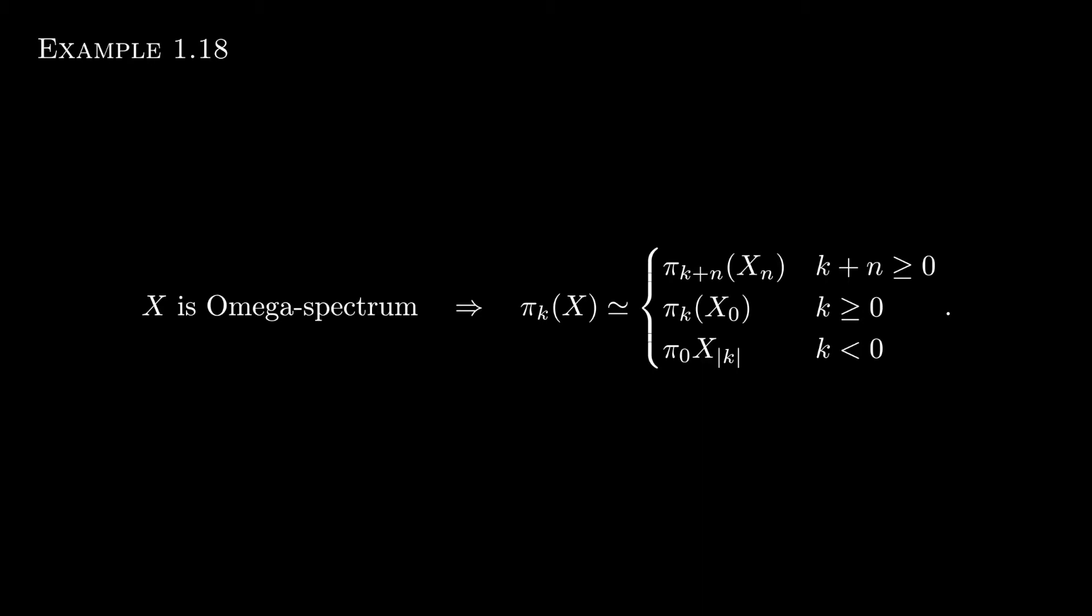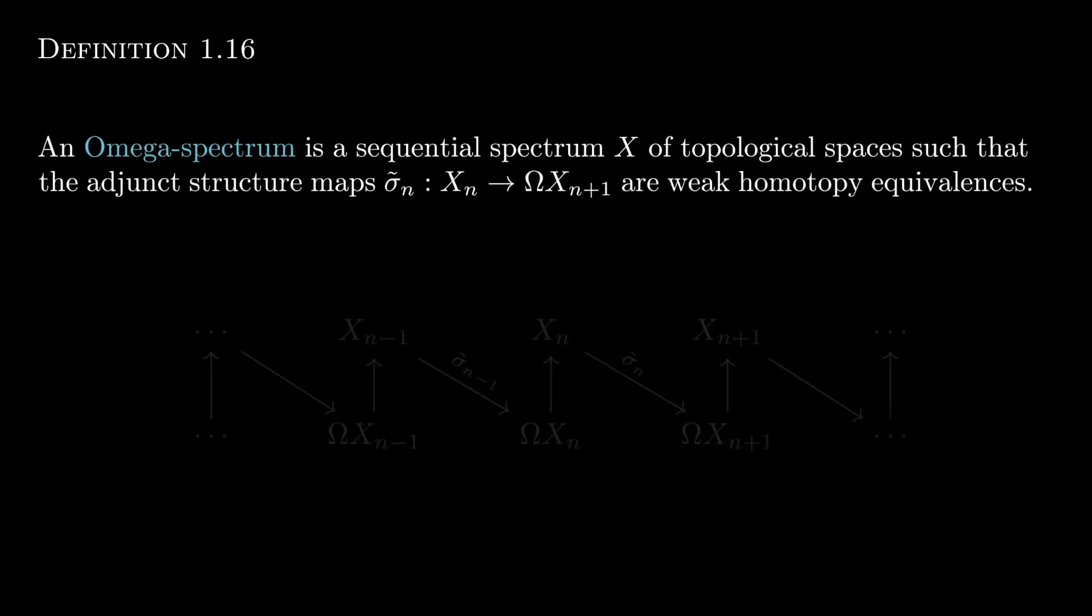Now recall that the structure maps in the level of homotopy groups are defined in this way, and we see that the added requirement we'd like to impose is to make adjunct structure maps weak homotopy equivalences. So just to make this explicit, here's the definition for omega spectra. Again, we require that the adjunct structure maps are weak homotopy equivalences.